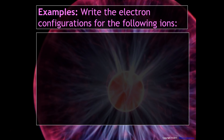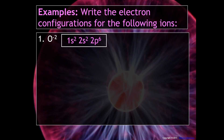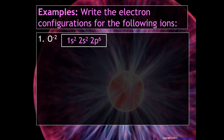If you were asked to write the electron configuration for the oxide ion, O²⁻, the minus two charge indicates that oxygen gained two electrons. So you're really writing the electron configuration for neon — even though oxygen didn't become neon, it still has the same number of electrons as neon and is therefore said to be isoelectronic with neon.